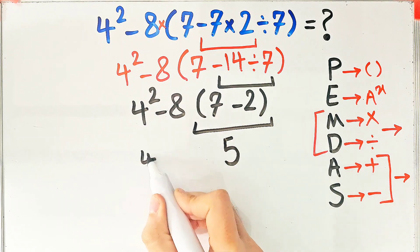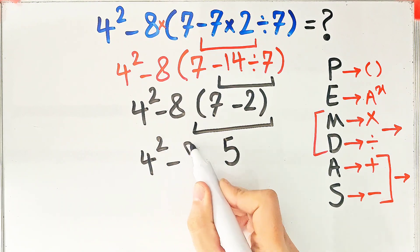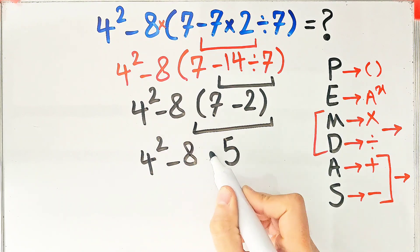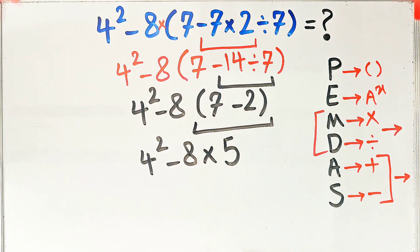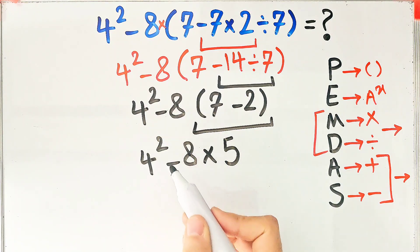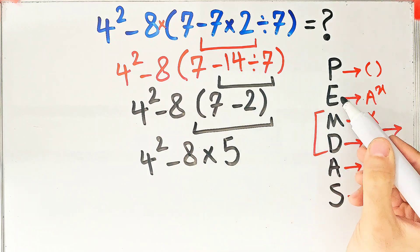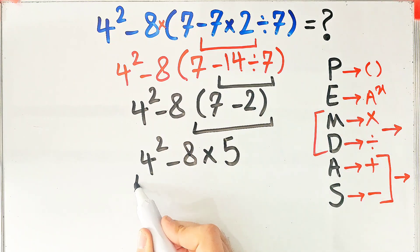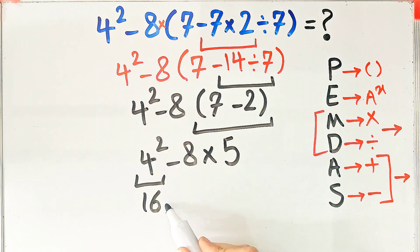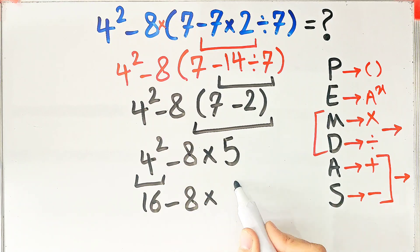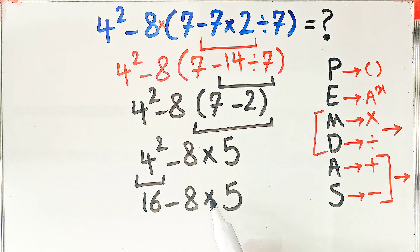In this next step we have exponent, subtraction, and multiplication. First we simplify the exponent: four to the power of two equals sixteen. Now we have sixteen minus eight, then times five.